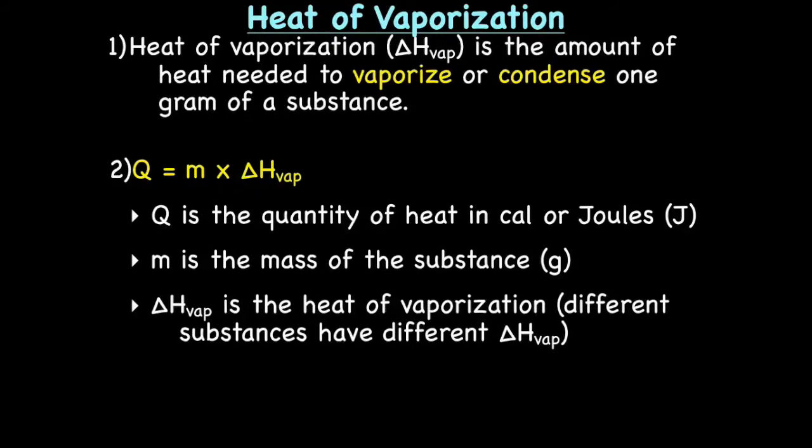Next up, heat of vaporization. Heat of vaporization or ΔH_vap is the amount of heat needed to either vaporize or condense one gram of a substance. So if we're vaporizing or condensing, we're talking about the liquid and gas phases. If we're vaporizing, we're going from liquid to gas. And if we're condensing, we're going from gas to a liquid.